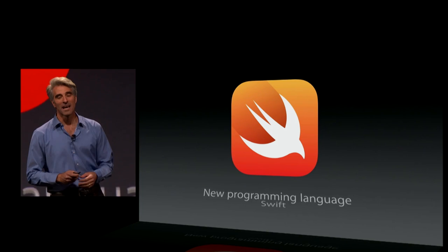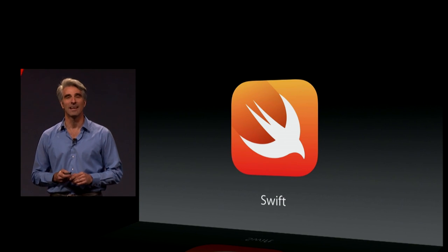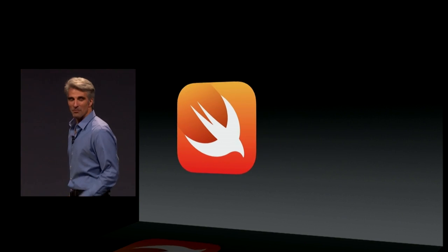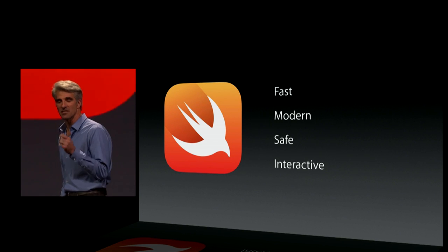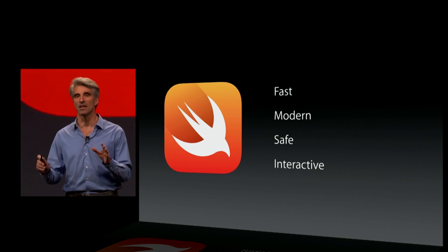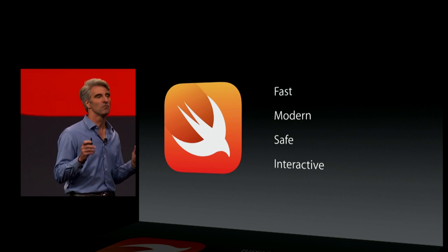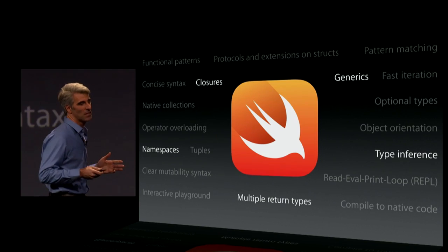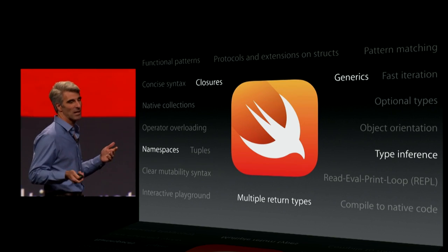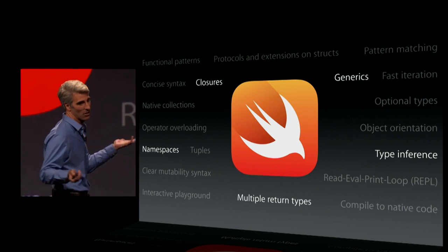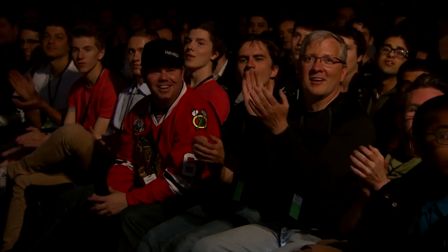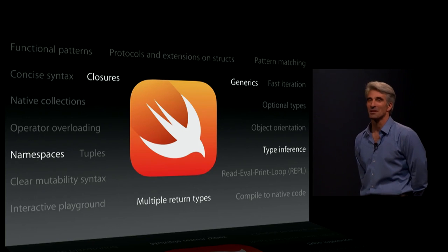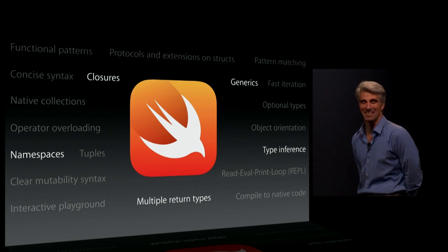We have a new programming language. The language is called Swift, and it totally rules. Swift is fast, it is modern, it is designed for safety, and it enables a level of interactivity and development that you've never seen on the platform. With features like closures, generics, type inference, multiple return types, and namespaces.